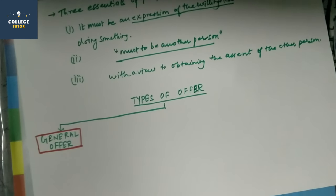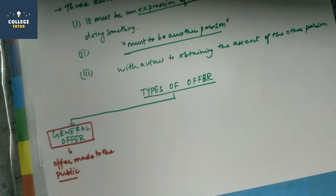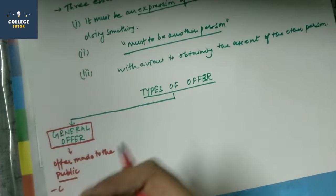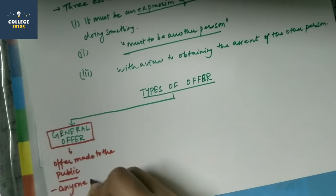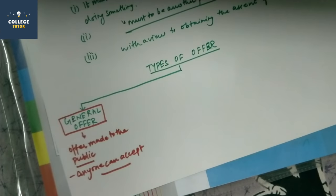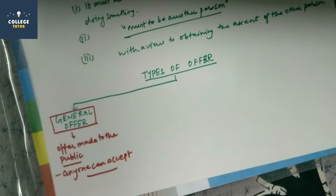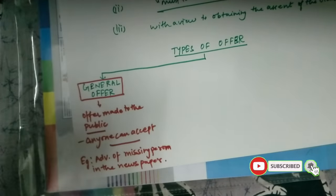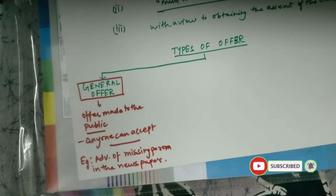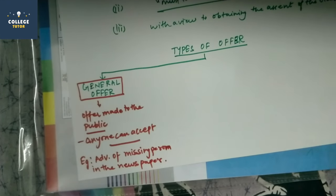So it's basically an offer made to the public in general. Made to the public generally, everyone is being offered this. And as it is offered to everyone, anyone can accept it. Anyone can accept the offer as it is made to public in general. Let's take an example. Now I made an offer to general, to public in general. Everyone is offered that whoever finds the missing person and brings them to me, I will give them a reward. So this offer is made generally to everyone, so anyone can accept this offer.